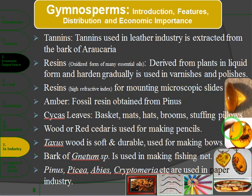Fossil resins are obtained from pines — as studied in fossils, organisms like scorpions can become entangled and preserved in resin. The leaves of gymnosperms are also used to make baskets, mats, beads, and brooms.